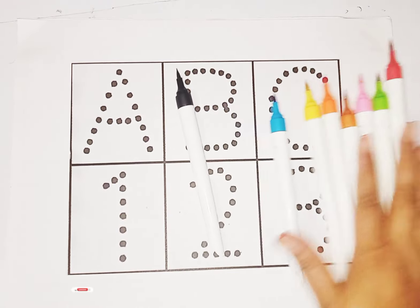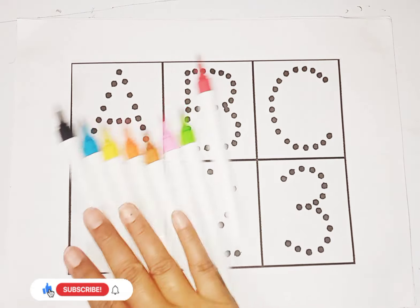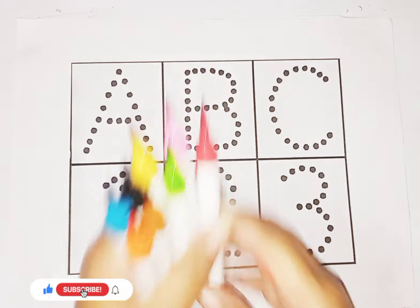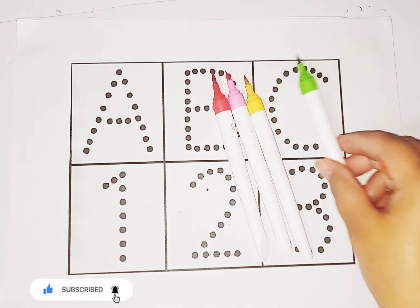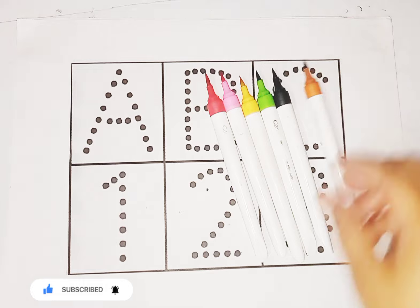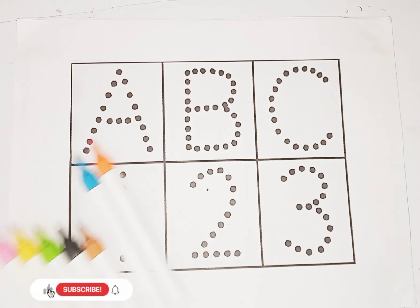These are colors. Cute, cute colors. Let's learn some colors name. This is red color, pink color, yellow color, green color, black color, brown color, blue color, orange color. These are colors.